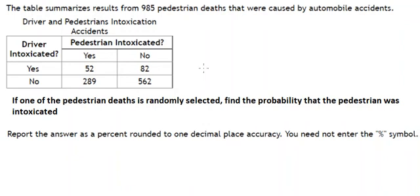Hello everybody. Today I will talk about probability. The table summarizes car accidents between drivers and pedestrians. Question number one: If one of the pedestrian deaths is randomly selected, find the probability that the pedestrian was intoxicated.